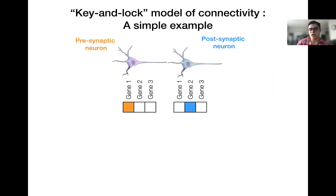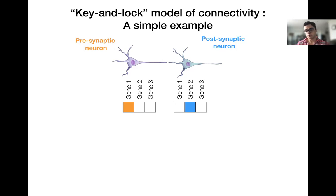To decipher the synaptic codes, we build a key-unlock model of connectivity. In this model, we say that there exists a code of complementary matchmaking molecules expressed on opposing neurons. To picture this premise, let's use a simple three-gene scenario and show how simple rules can be used to generate complex nervous system wirings.